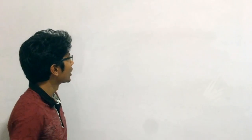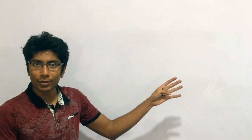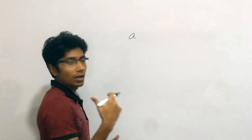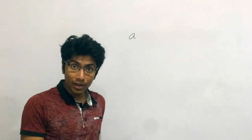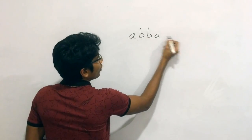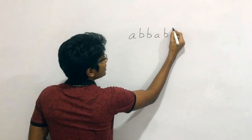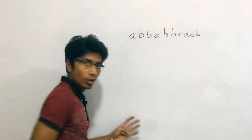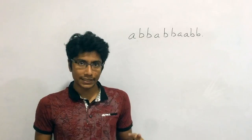Hey guys, this is GKCS. We are talking about the fourth problem from the Cook-off of CodeChef, which is Chef and the Great Voluntary Programme. What we have is a line of people, and they are defined as either taking an apple or taking a banana. So it's just a string of A's and B's that you are given, and you have two constraints in this string.